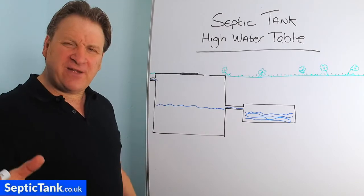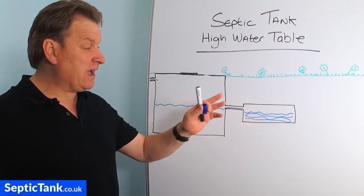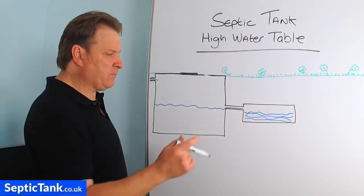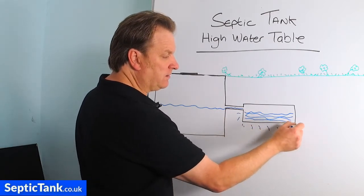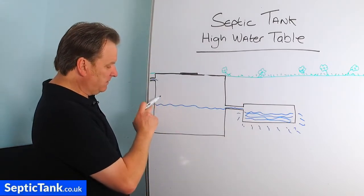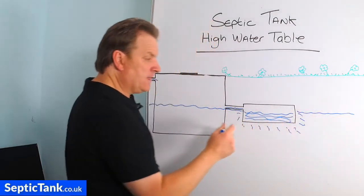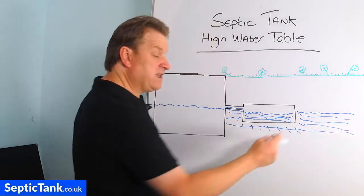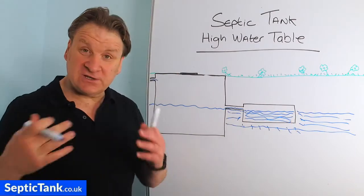If you live in an area that has a high water table, it will affect the function and the permeability of the water in the soak away. Normally the water would just soak away naturally into the soil, but when you've got a high water table — let's say the water table is the same height as the water in the septic tank — if your soak away is now surrounded by water, it can't soak away anymore because the height of the water table will engulf and consume your soak away.